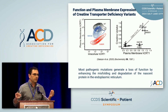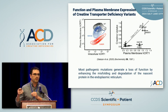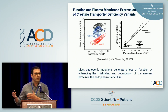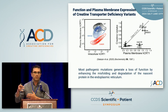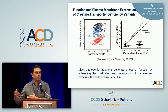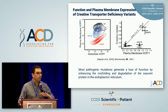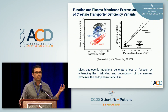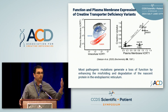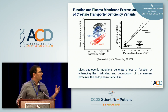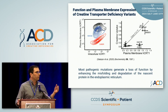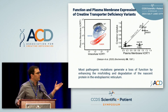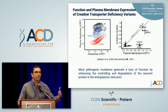In cystic fibrosis research, they found that some variants, if you actually stop the quality control machinery of the cell from degrading the protein before it's made and just let it traffic, sometimes these proteins that are marginally stable still function. So we're looking for a corrector for a lot of these variants. To do that, we need to push the trafficking efficiency up.